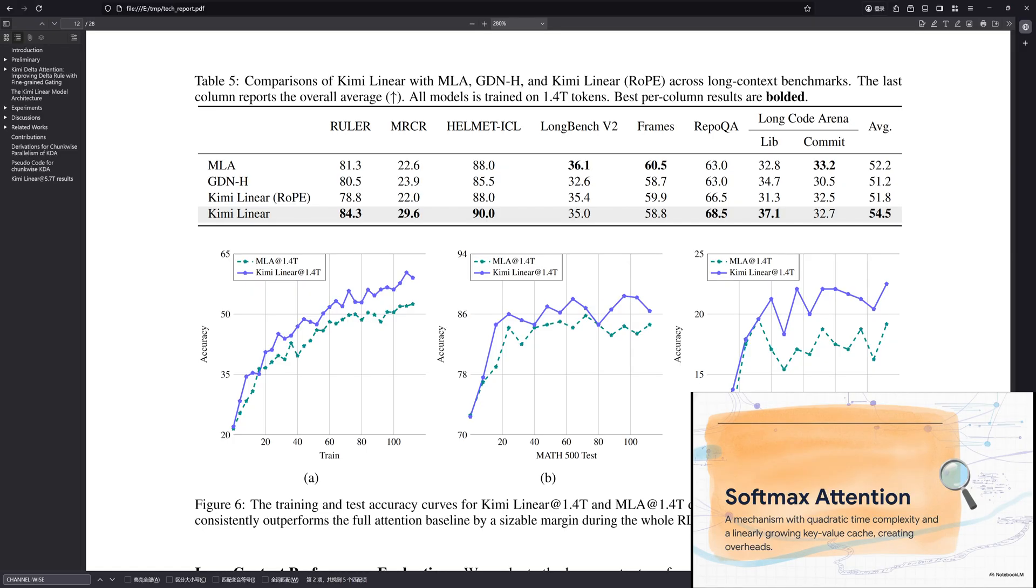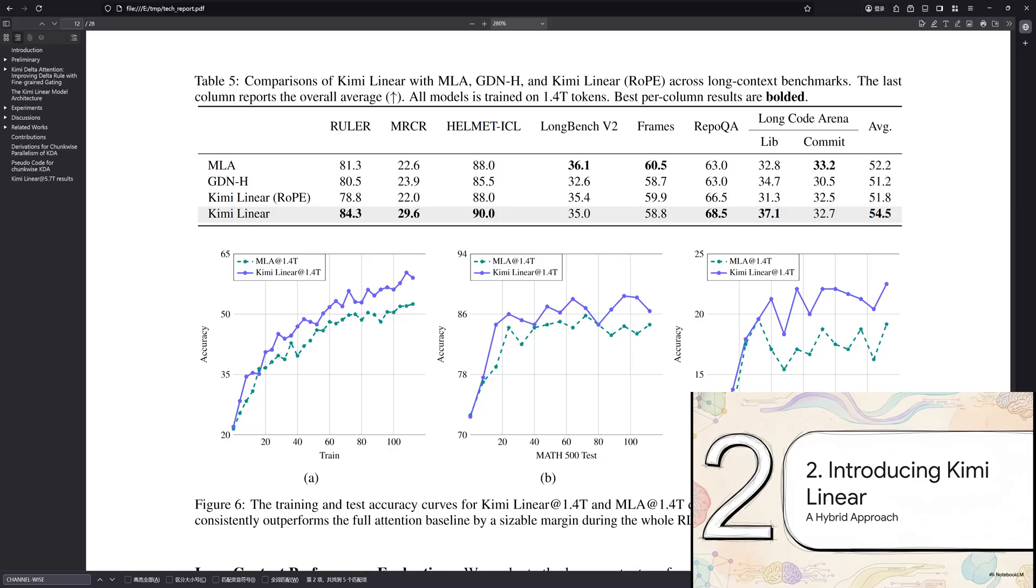So, the main culprit here is a mechanism called softmax attention. Now, think of tokens as little pieces of words. For every single new piece of a word the model processes, it has to look back and compare it to every single other piece that came before it. This means if you double the length of the text, you don't just double the workload, you actually quadruple it. The computational needs just explode, and you create this insane bottleneck.